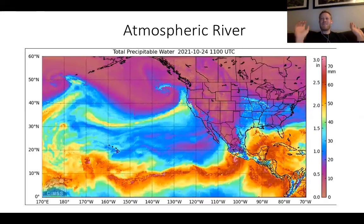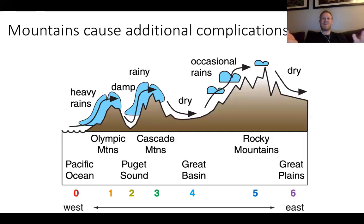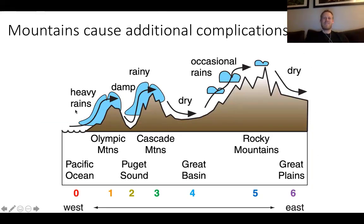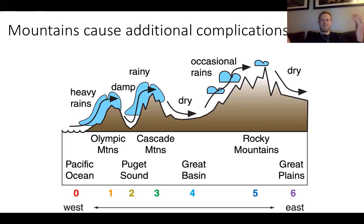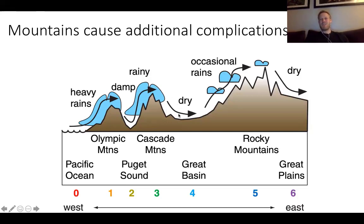The cyclone model doesn't worry about topography, but in reality, the mountains make things much more complicated. In our neck of the woods, as these fronts approach our mountains, the vertical motions in the front get further modified by the mountains themselves. The lifting on the windward side of the mountains gets enhanced, which leads to even more precipitation, while the descending air on the lee side — especially to the lee of the Cascades — really dries things out and makes things messy.